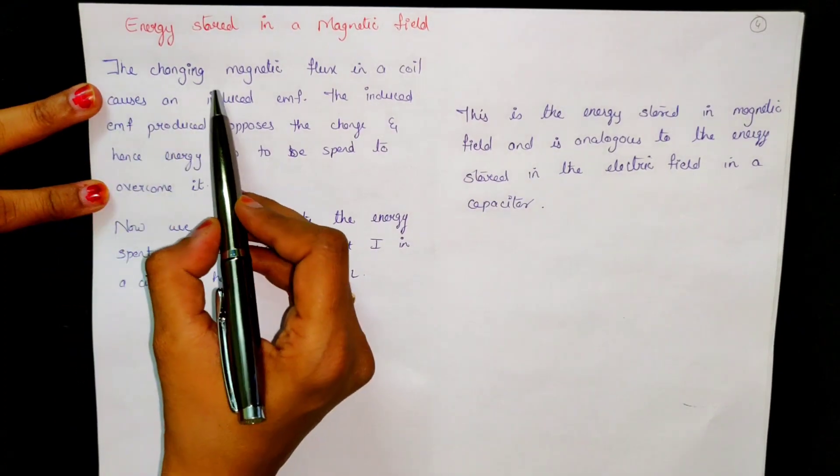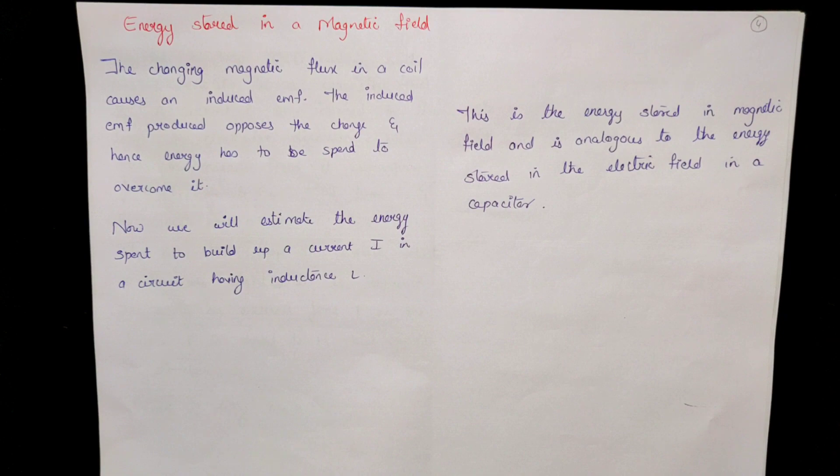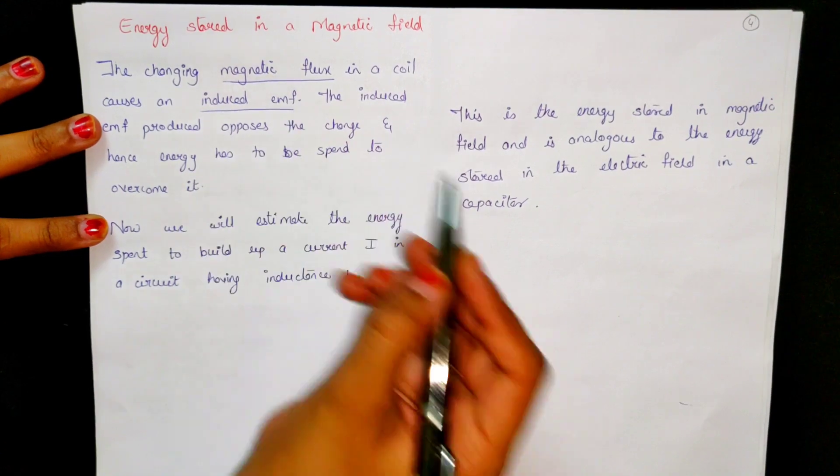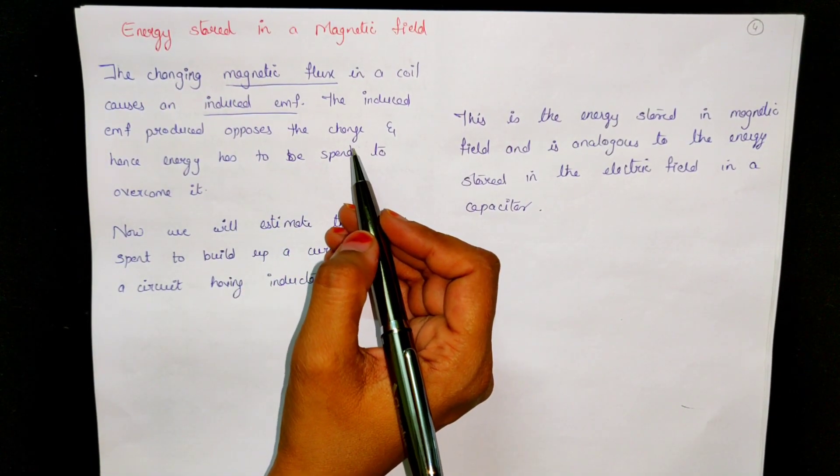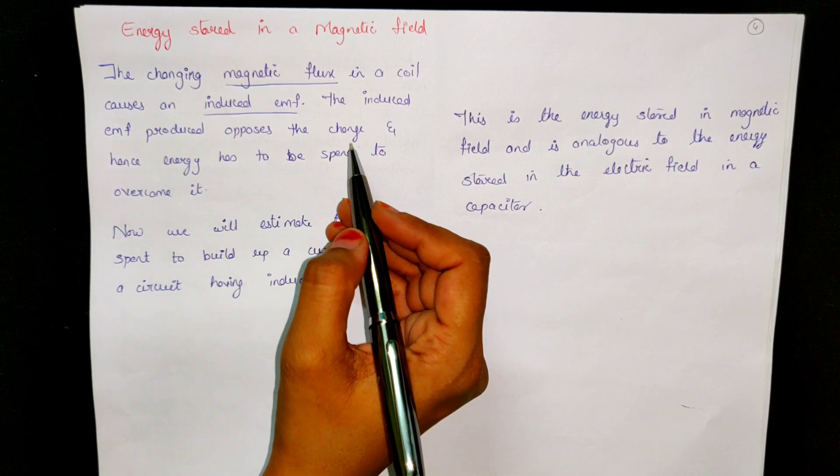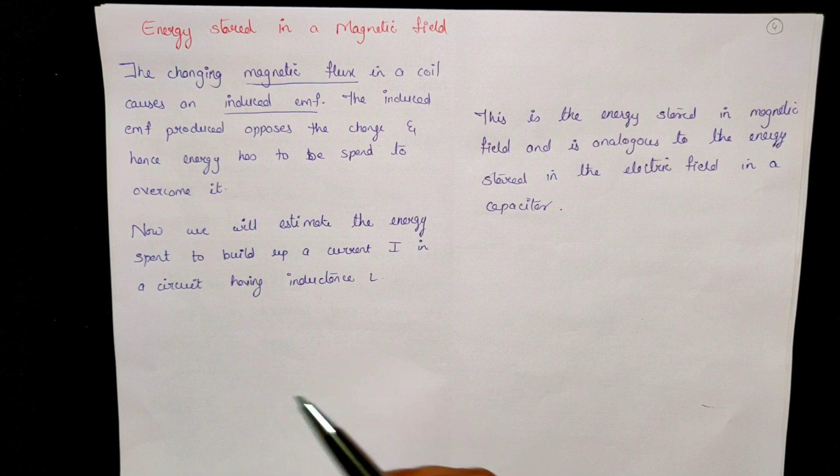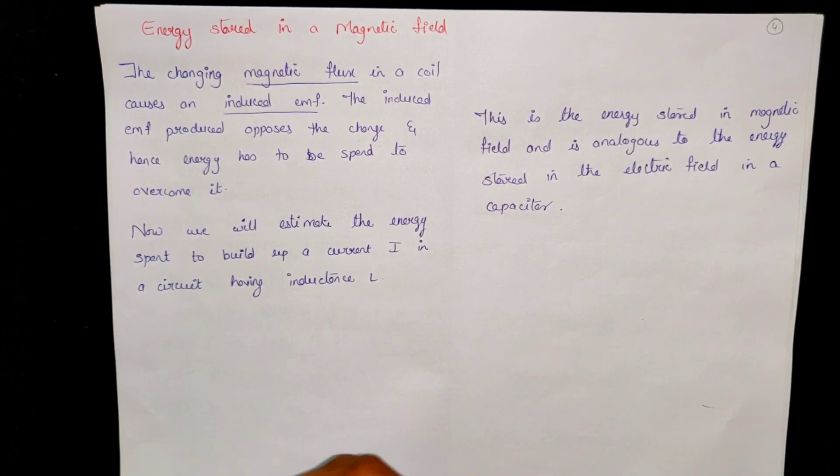Now what is written here: the changing magnetic flux in a coil causes an induced EMF. You know that when the flux changes, then EMF will induce. This EMF induces change that will oppose.